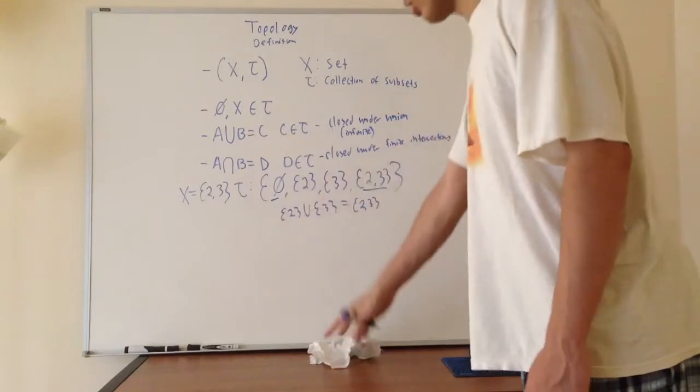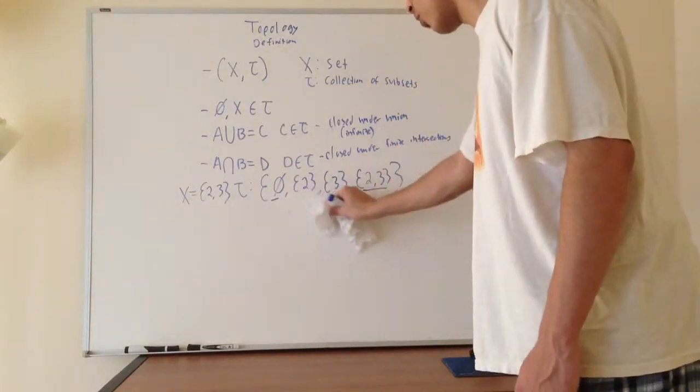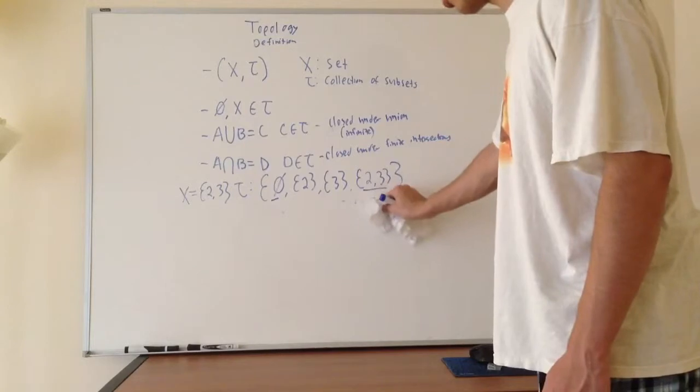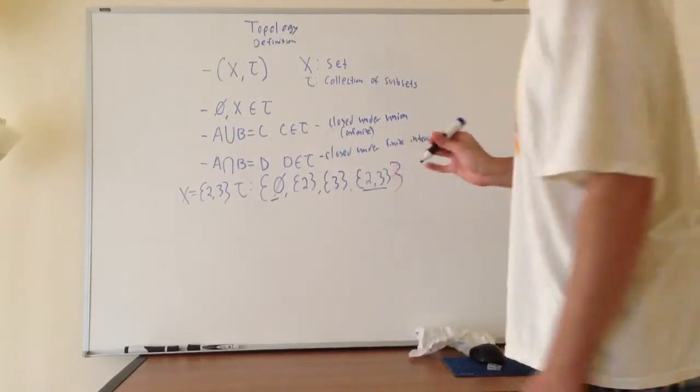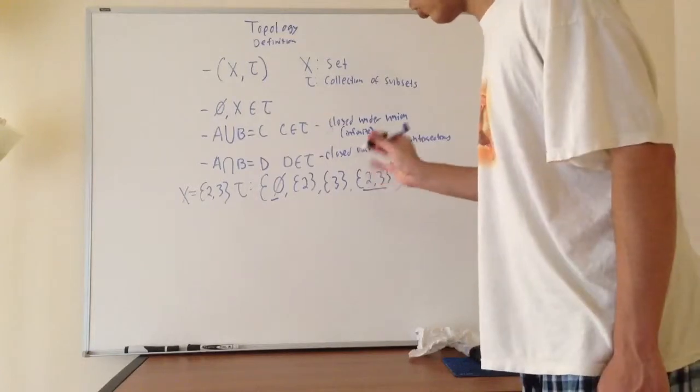And then what about intersection? This is important because if it fails, something can fail to be a topology. A lot of times it's because the intersection doesn't hold. It happens pretty often. So let's just check that.